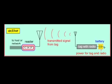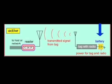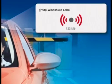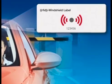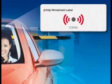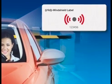An active tag has a transmitter and its own power source, typically a battery. The power source is used to run the microchip circuitry and to broadcast a signal to a reader, like the way a cell phone transmits signals to a base station. It is used for long communication ranges of more than 100 meters, like tags for vehicle tracking systems on roads.